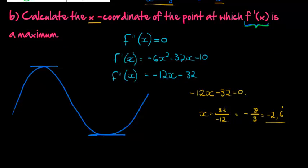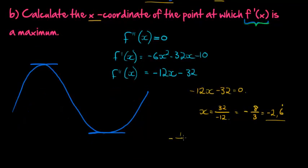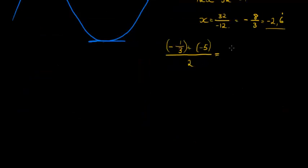To find the midpoint between two values, I add them together and divide by 2. So I say negative 1 third plus negative 5 over 2 gives me negative 1 over 3 minus 15 over 3. That's where I get the 5 from, 15 divided by 3. And this gives me negative 16 over 3. Negative 1, negative 15 gives me negative 16 over 3. Divided by 2 is negative 16 over 8.